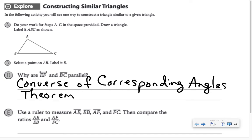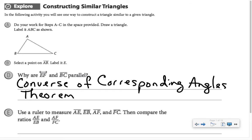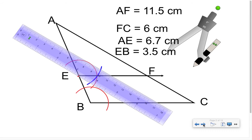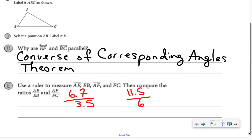We measured those segments, and they want us to compare these ratios: AE over EB, which is 6.7 over 3.5, and AF over FC, that's 11.5 over 6. I'm going to compare these ratios by calculating the decimal value. 6.7 divided by 3.5 is approximately 1.91, and 11.5 divided by 6 is approximately 1.92.